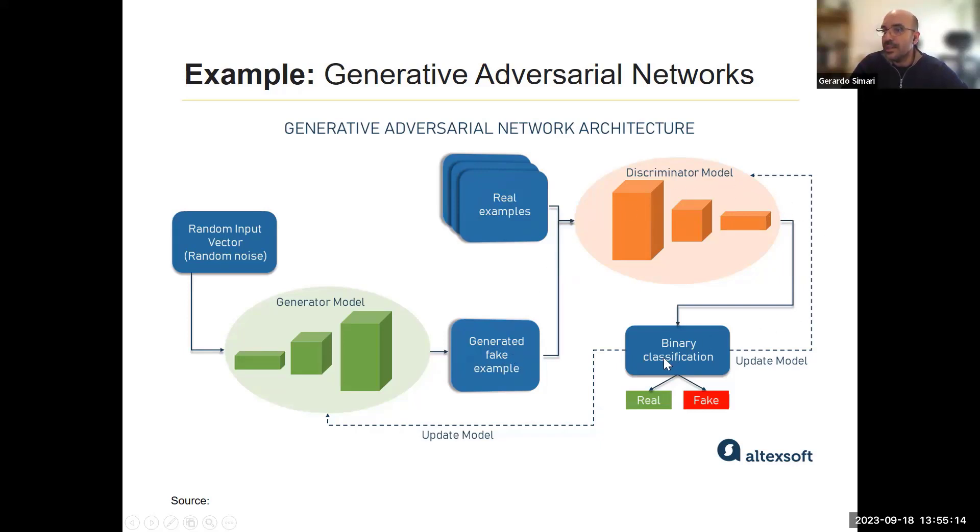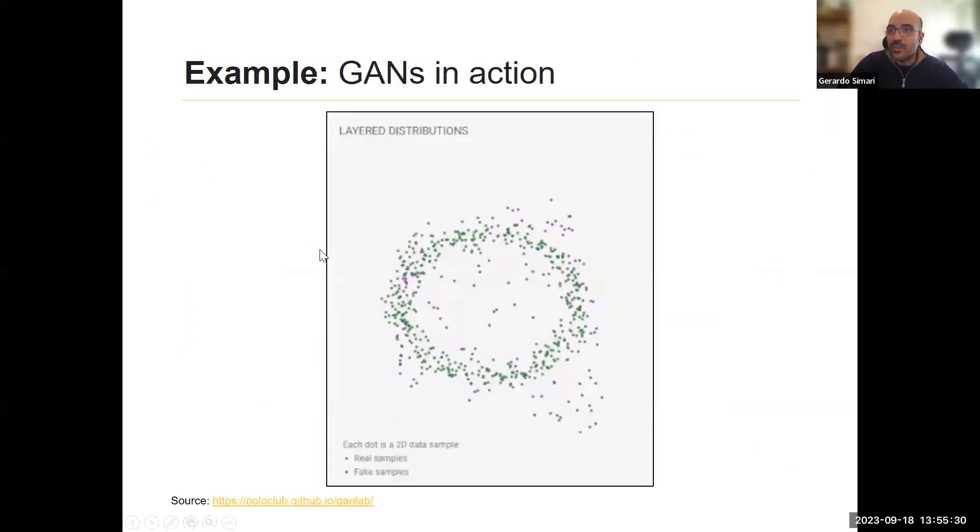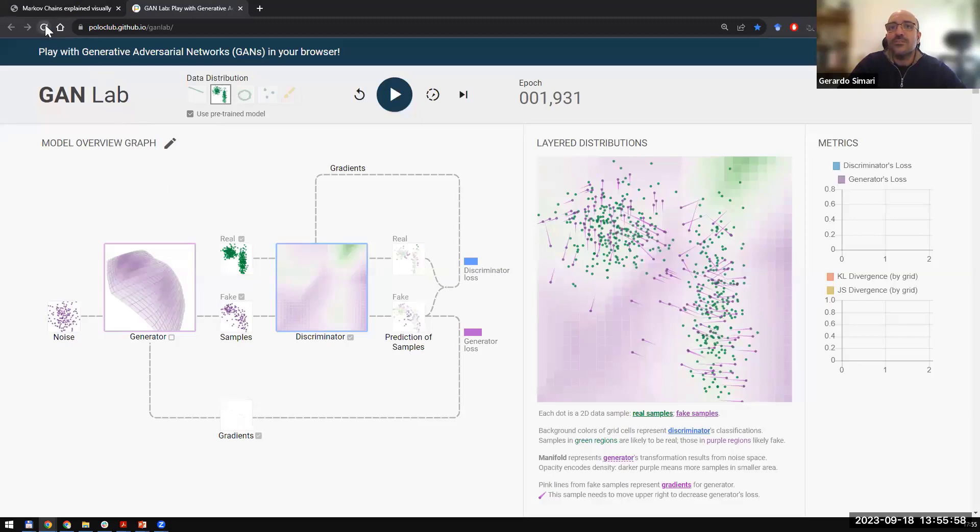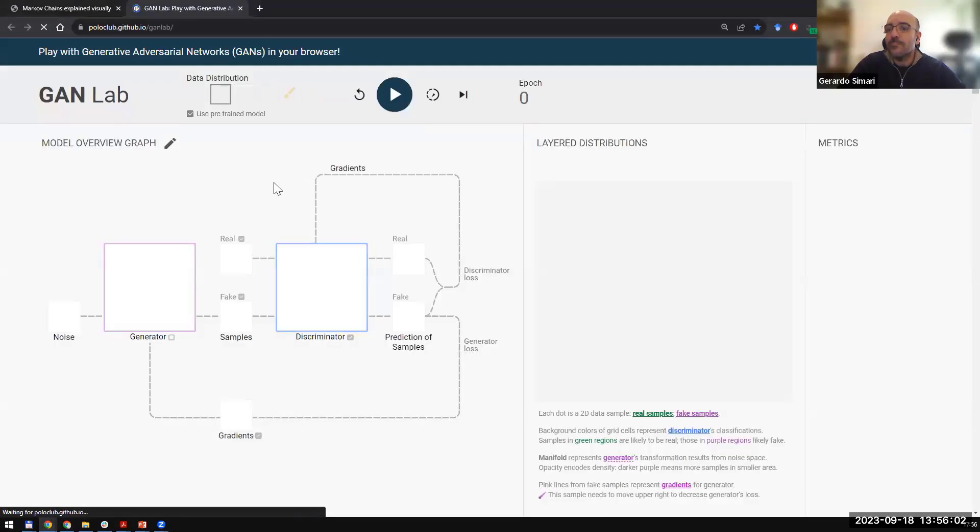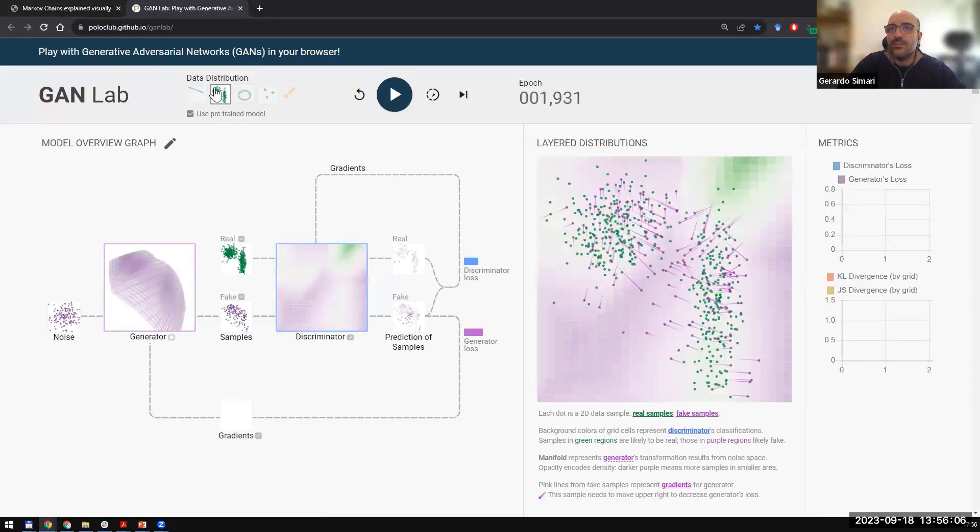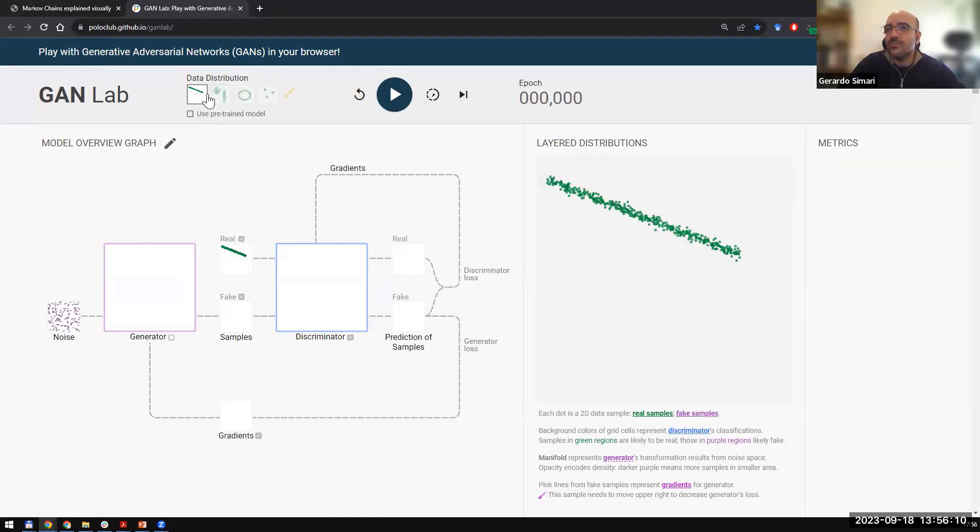And then you have the discriminator, which tries to see if they can discriminate between real examples and the fake ones that are being generated. In this case, it just says real versus fake. And then based on this performance, the generator will try and adjust its performance. I also have an animation of what's going on. We're going to see this working in a second.